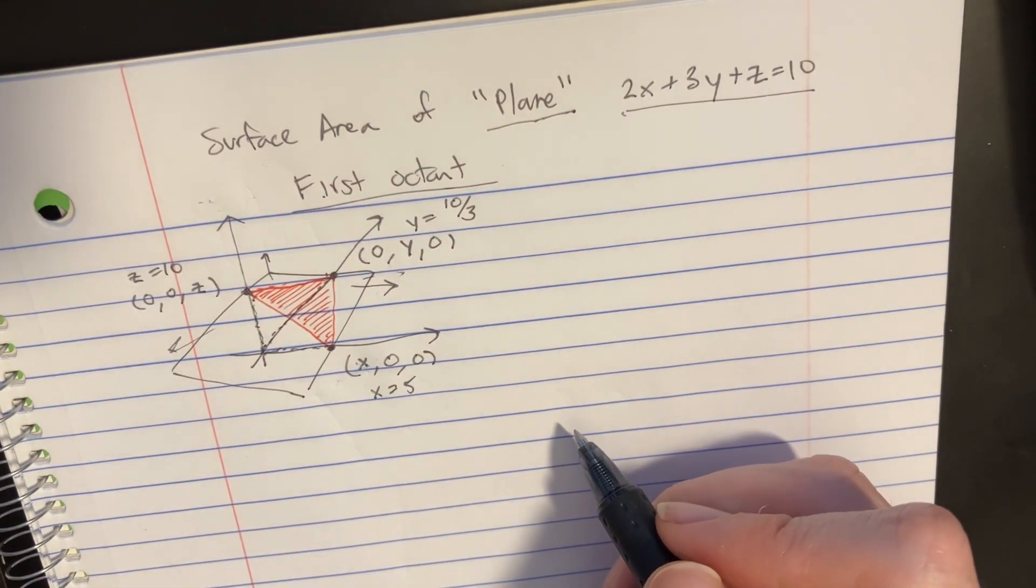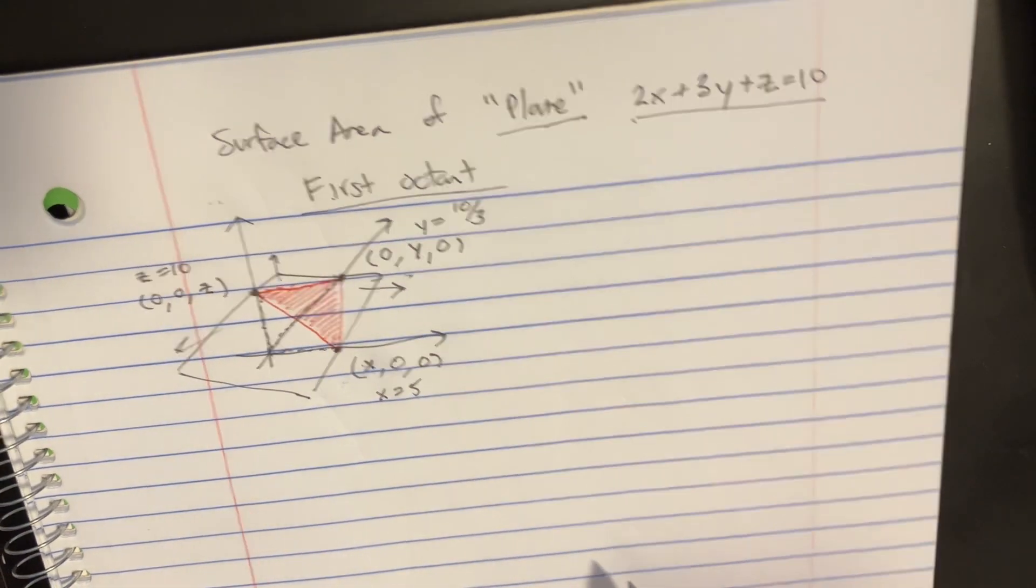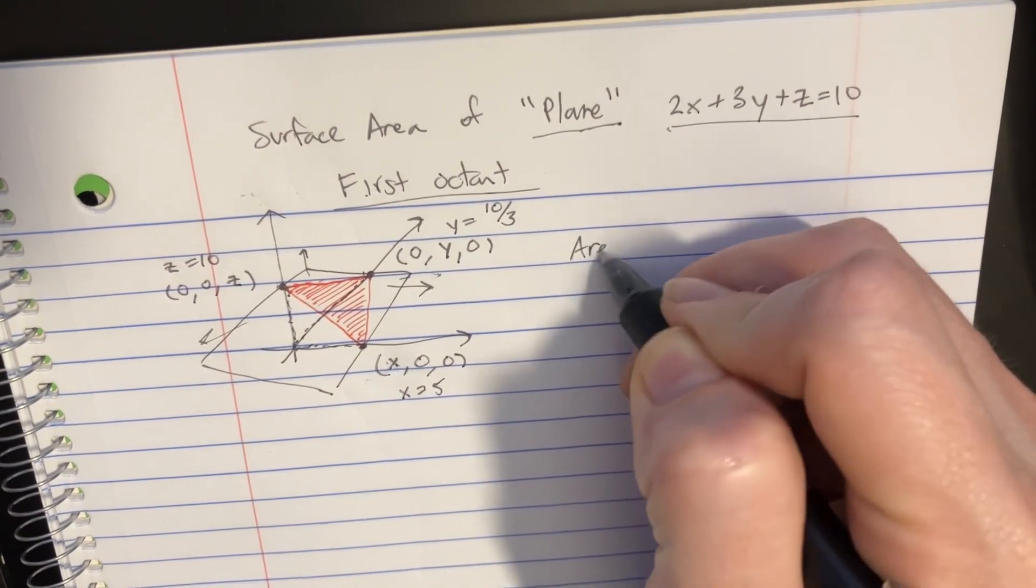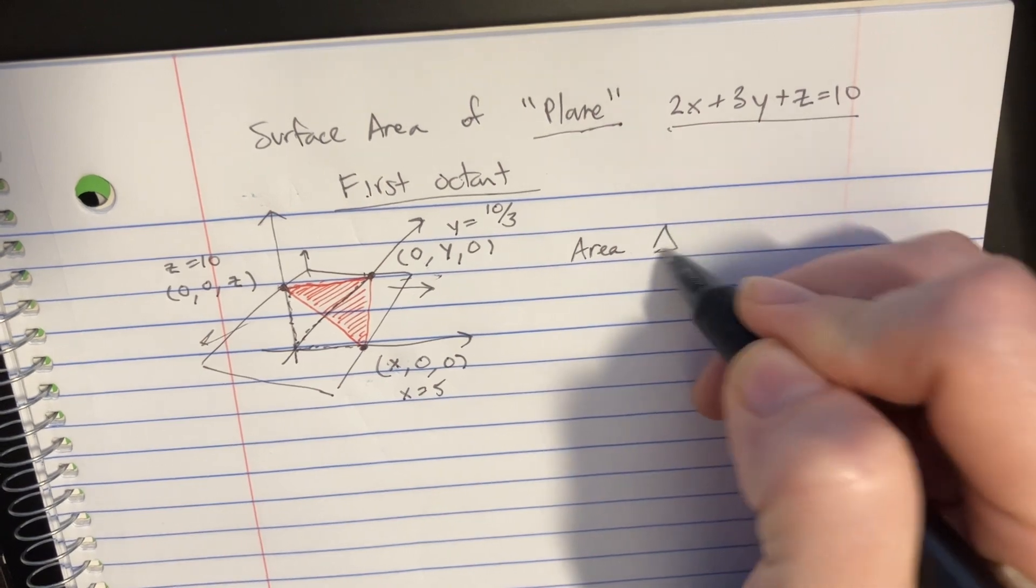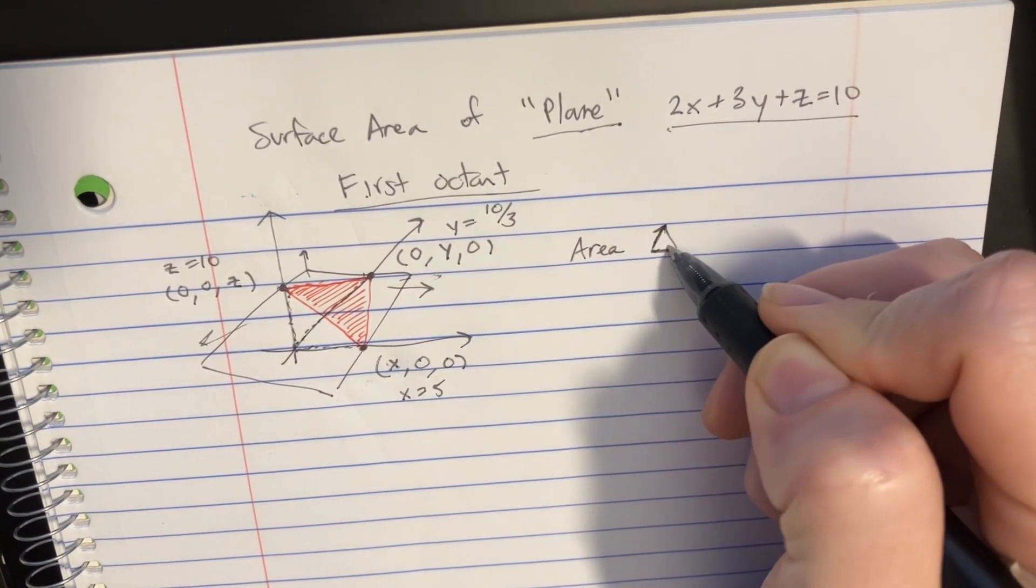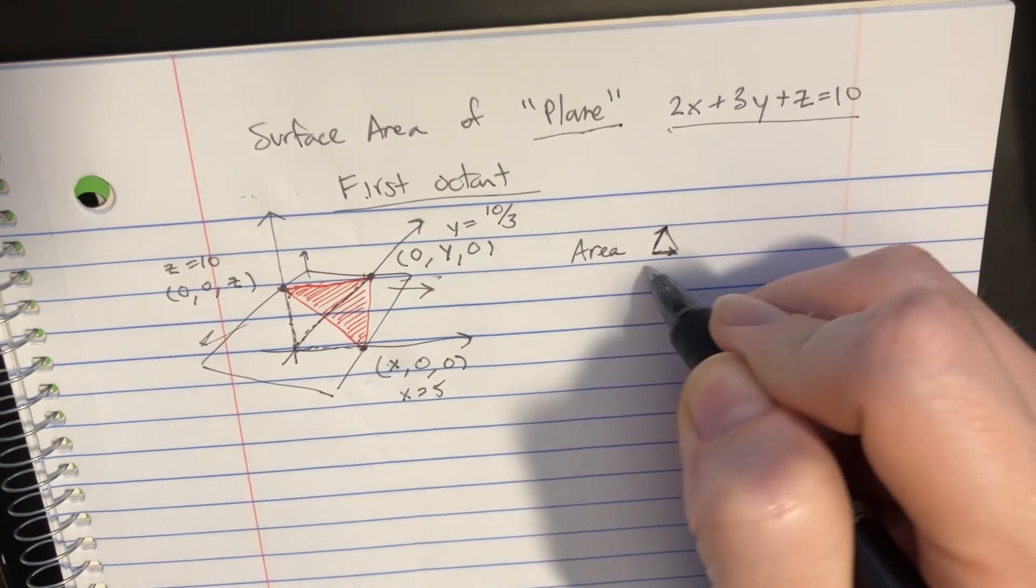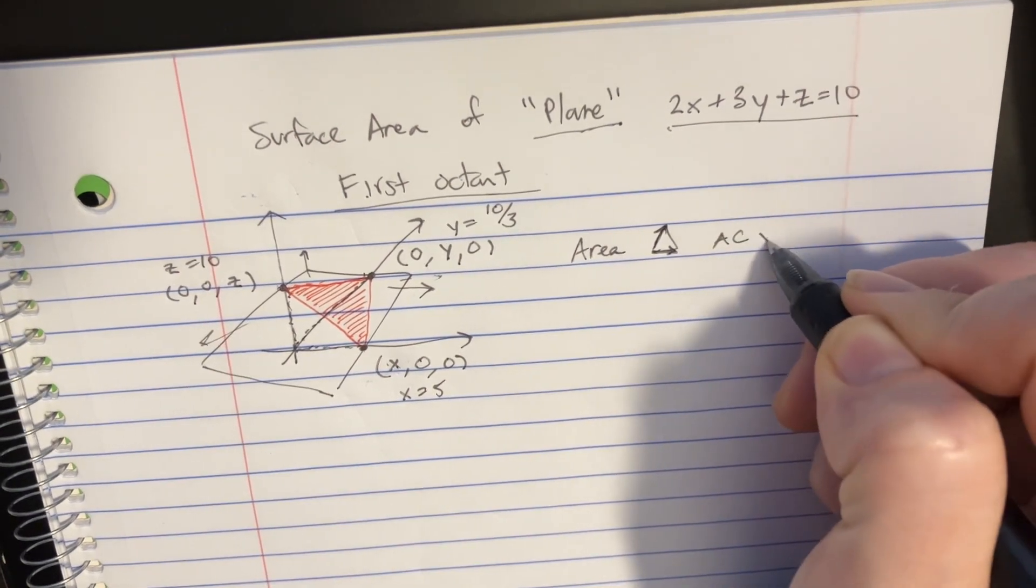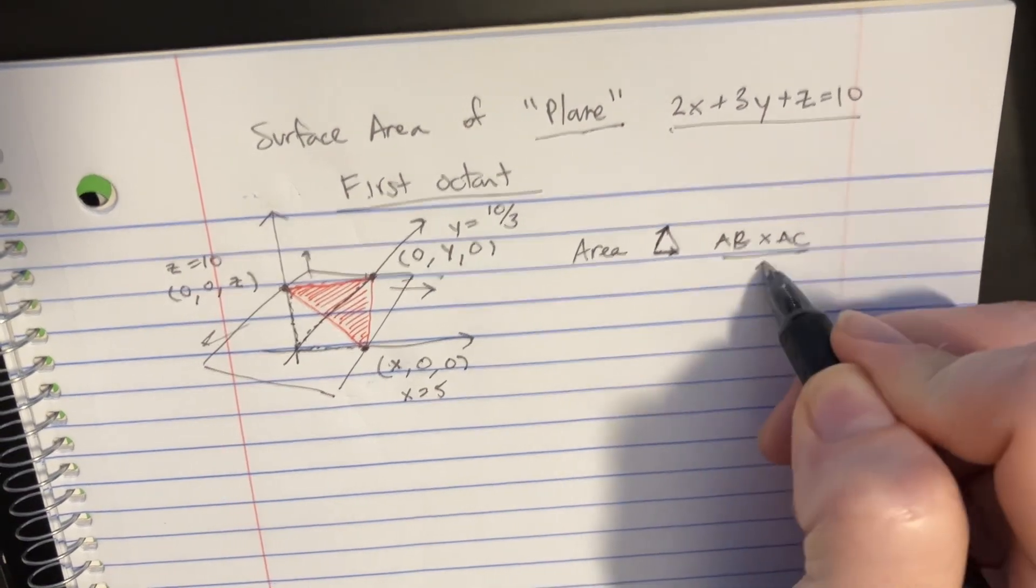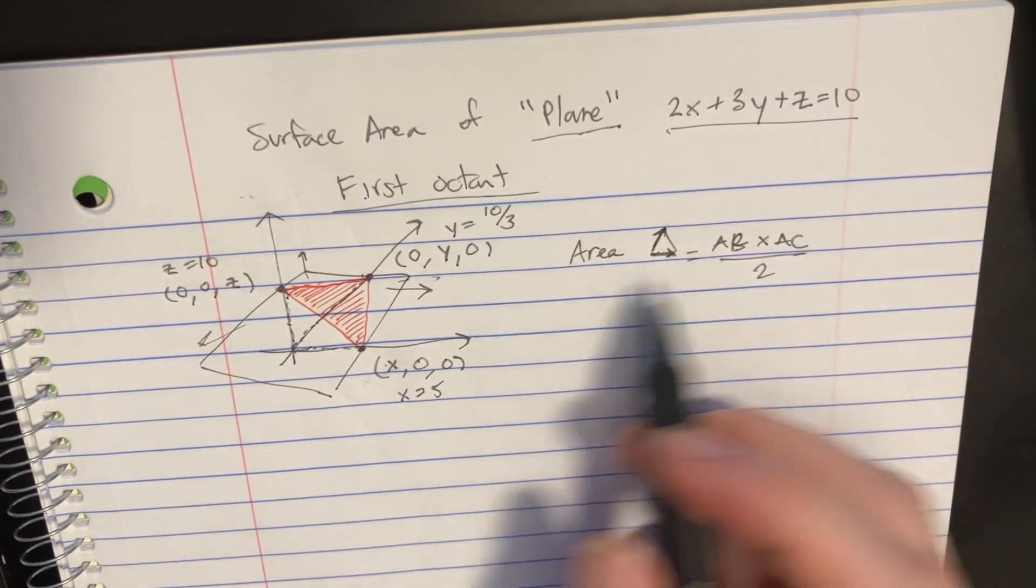If we remember from some time ago, we had this nice equation: the area of a triangle, if you know this vector and that vector, is going to be AB cross AC divided by 2 gives you the area of the triangle.